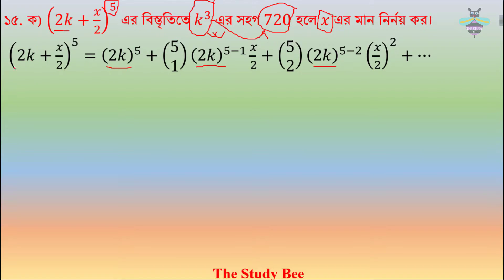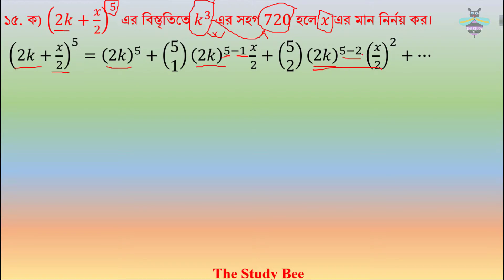2k, this is the power n minus 1, n minus 5, 5 minus 1, into x divided by 2. The power n minus 2, plus x divided by 2, the power n minus 2, plus x divided by 2, whole squared.